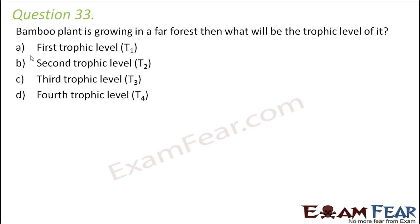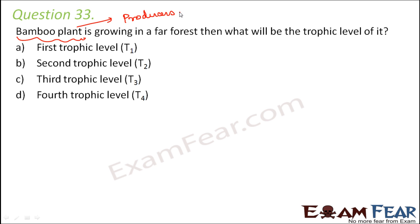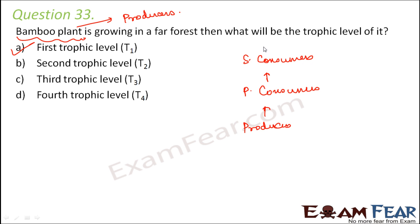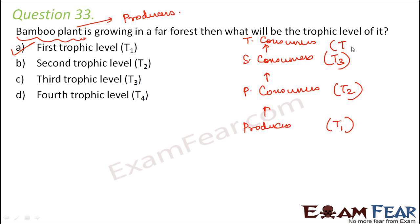Question number 33: a bamboo plant is growing in a forest — what will be its trophic level: T1, T2, T3, or T4? Bamboo plants are green plants and therefore producers, which are autotrophs that prepare their own food. Producers always occupy the first trophic level, T1. Above producers are primary consumers at T2, secondary consumers at T3, tertiary consumers at T4, and so on.